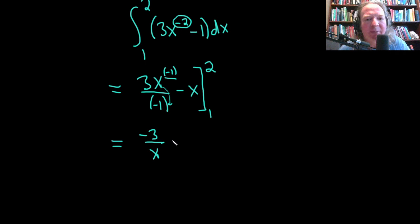And let's put the negative up top, minus x. And we're going from 1 to 2.